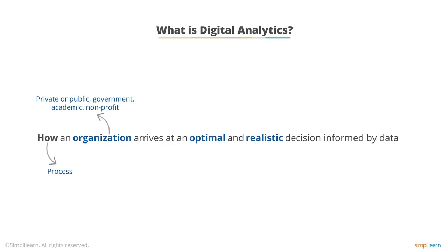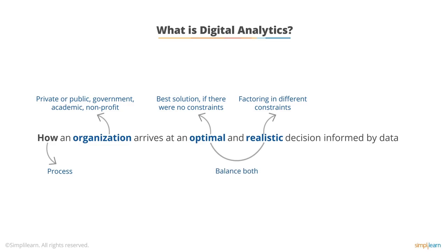'Optimal and realistic' is really important because it plays on the ability of the digital analyst to be creative — to find the balance between what would be the best solution if there were no constraints of budget, politics, or legal and ethical environment, versus what you can realistically do. This is key for digital analysts because oftentimes analysts make recommendations that don't go anywhere, simply because they are not able to make recommendations that are both optimal and realistic. We need to find that balance.